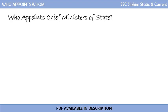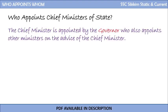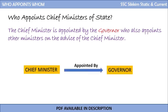Do you know who appoints the chief ministers of the state? If you don't know, the correct answer is the governor of the state. The chief minister is appointed by the governor, and it is the governor who also appoints other ministers on the advice of the chief minister.